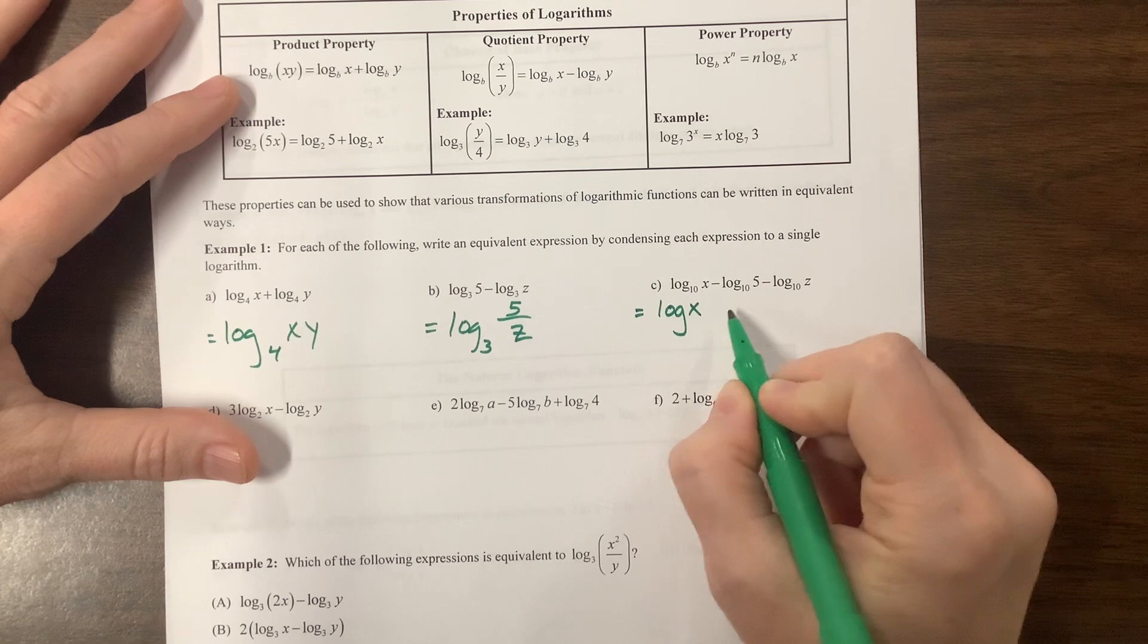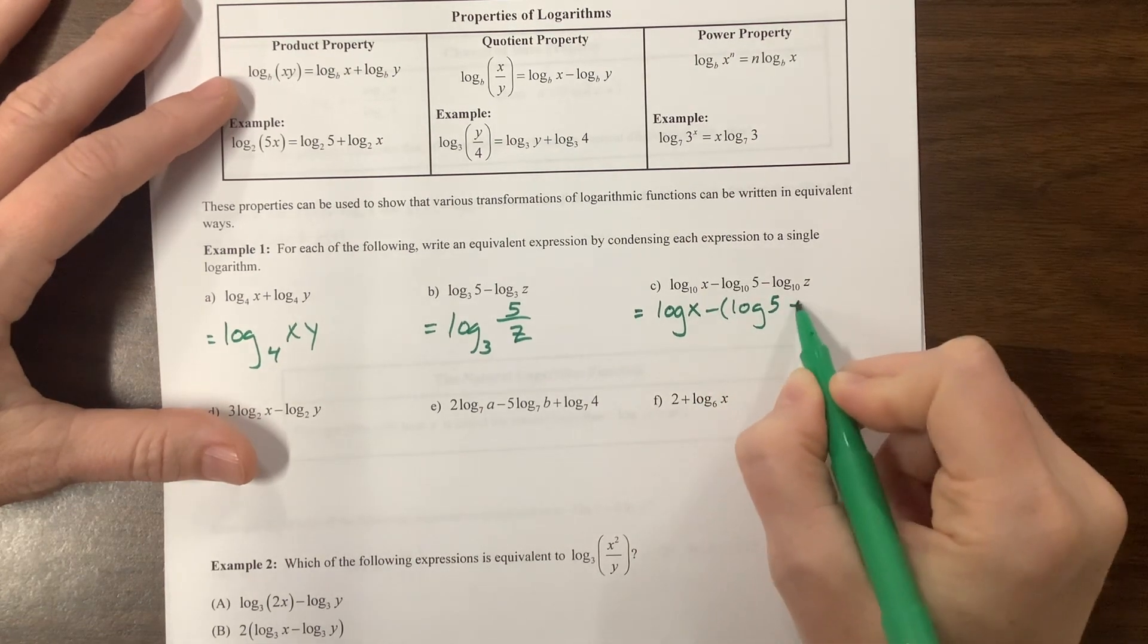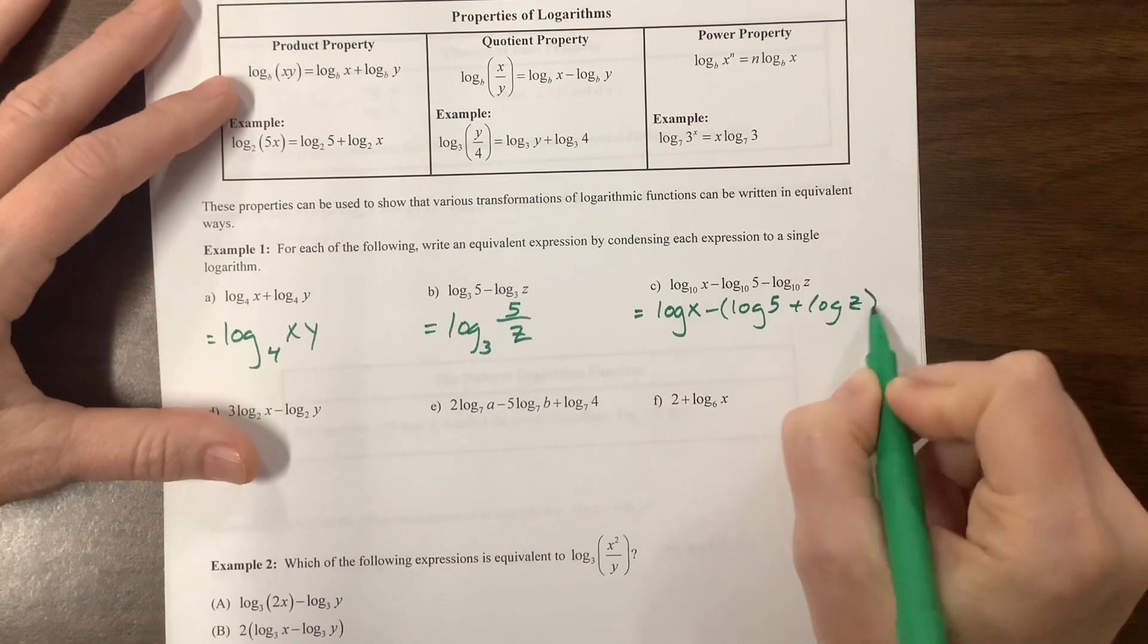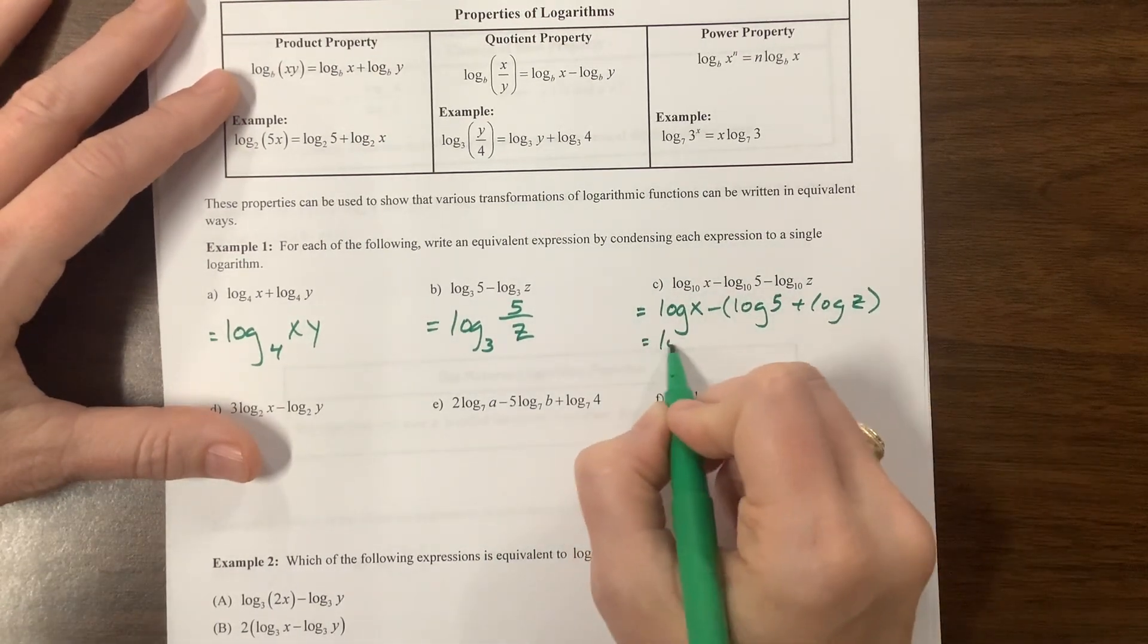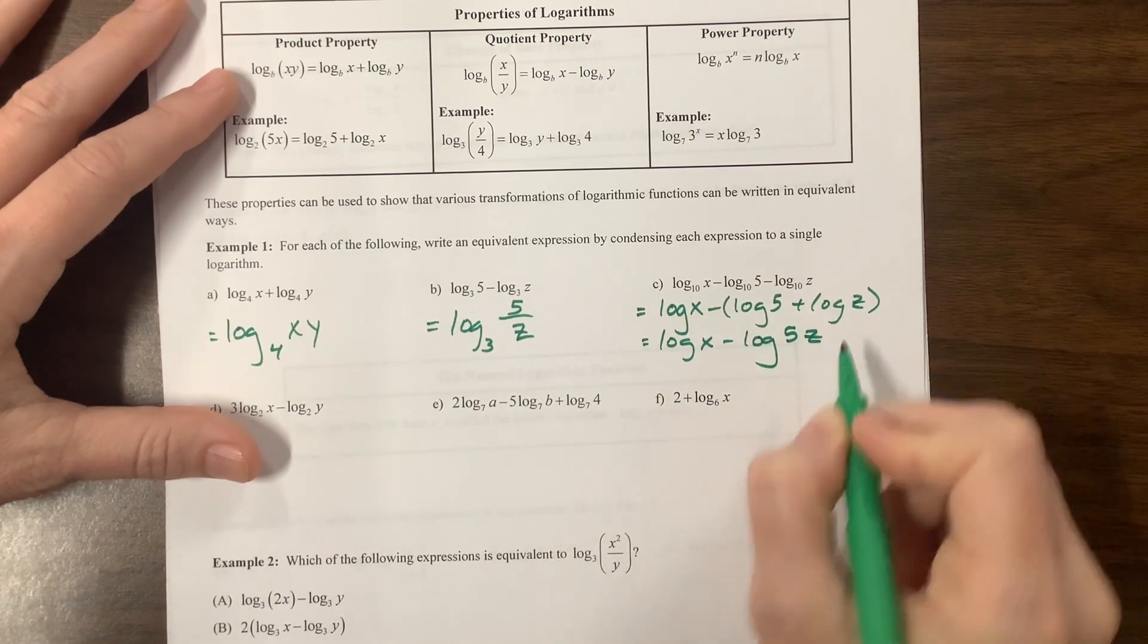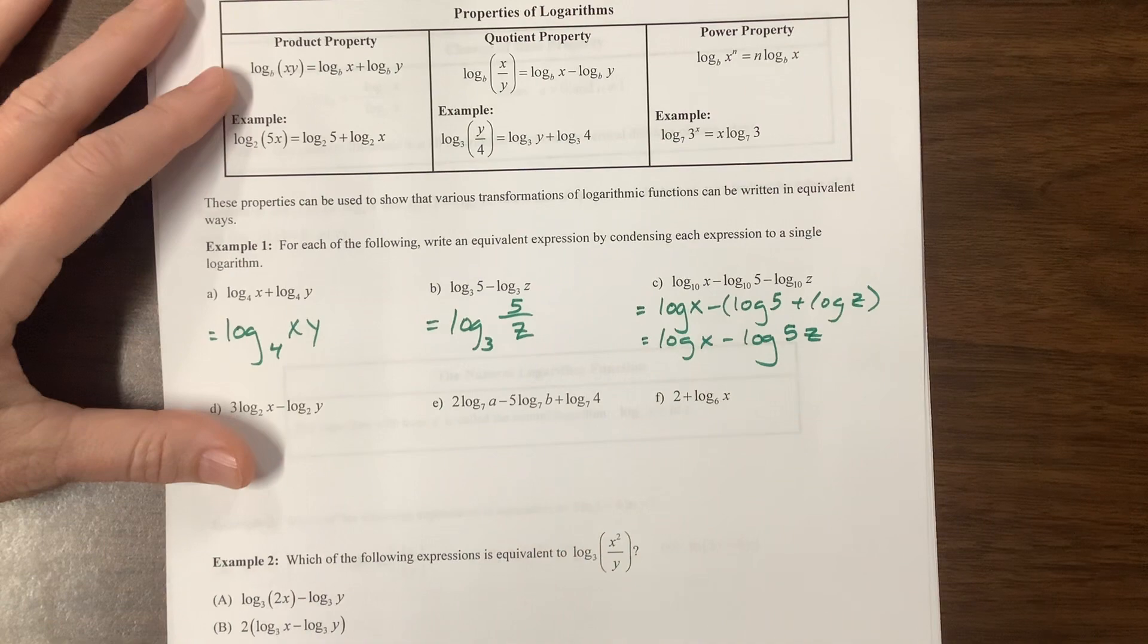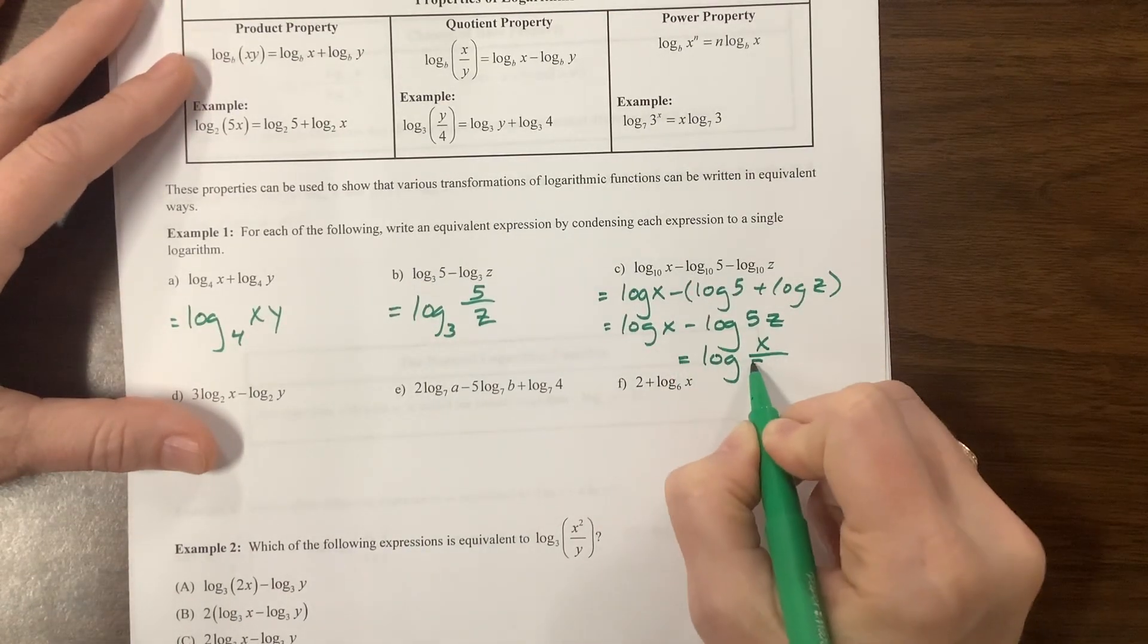But I could think of this as being minus log of 5 plus log of z because I factored out the negative from those. So those two are going to get squished together with multiplication. And now subtraction gets squished together with division. And so this equals log of x over 5z.